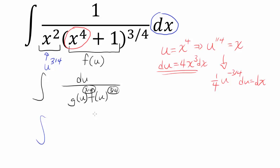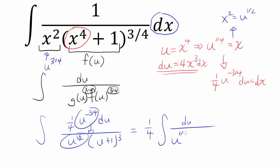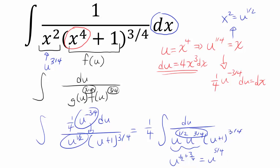We have dx equal to one-fourth u to the negative three-fourths du. Our x squared becomes u to the one-half. So we get the integral of du over u to the one-half times u to the three-fourths times (u plus 1) to the three-fourths. But u to the one-half plus u to the three-fourths gives u to the five-fourths — not three-fourths. That's five-fourths. We are so close, but not quite.